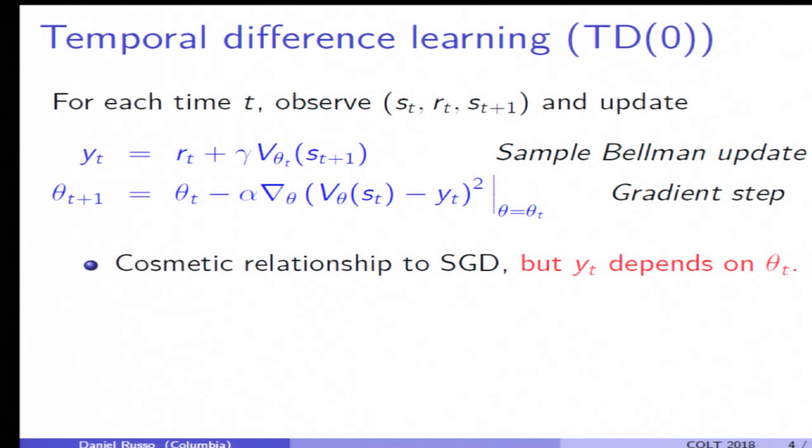I form from that an updated value prediction, this thing y_t, which is the reward plus my estimated discounted reward to go into the future.